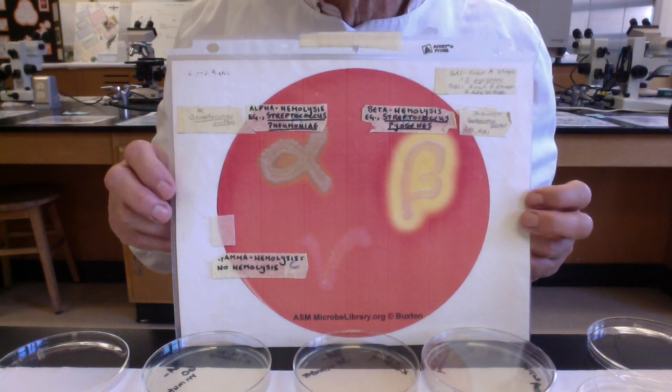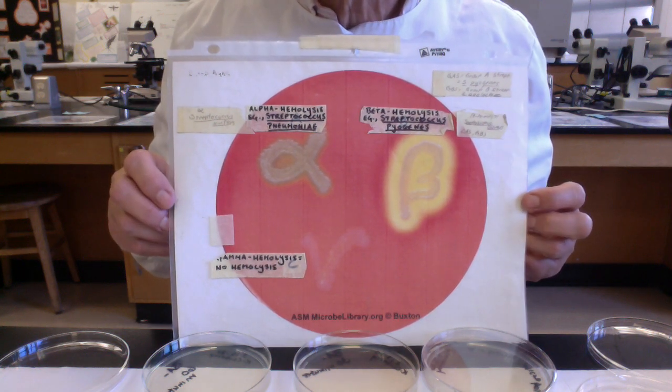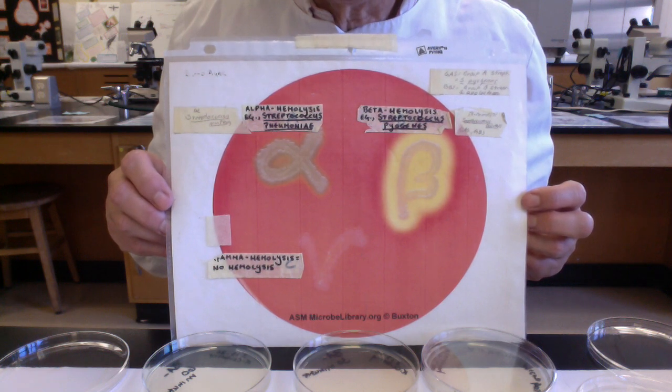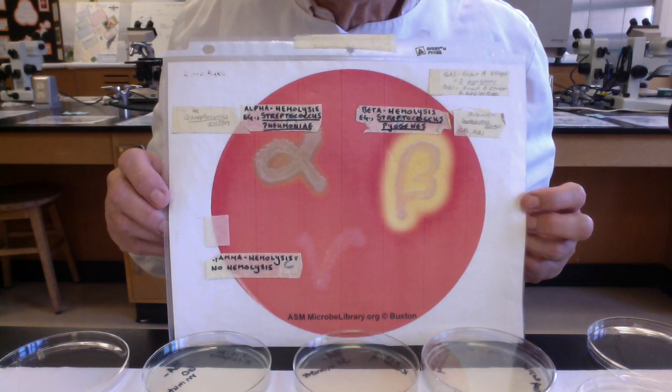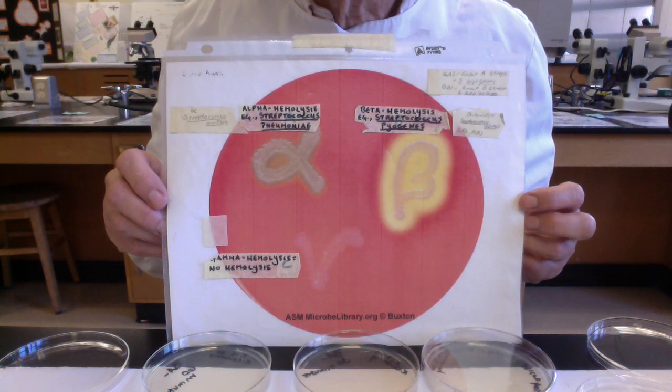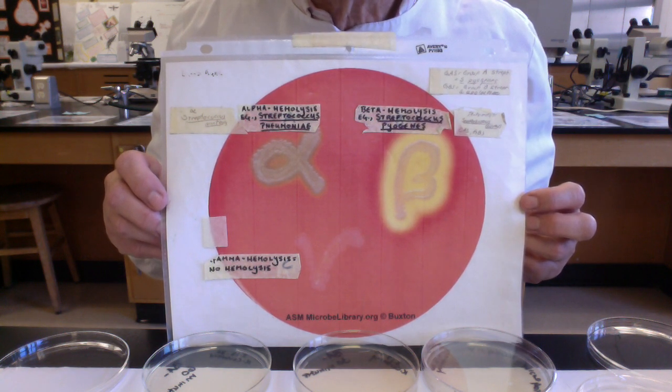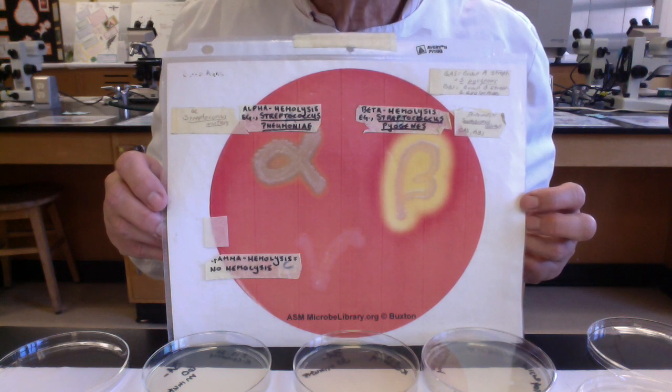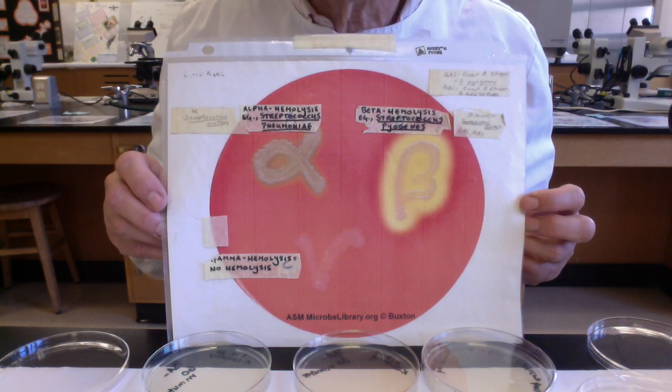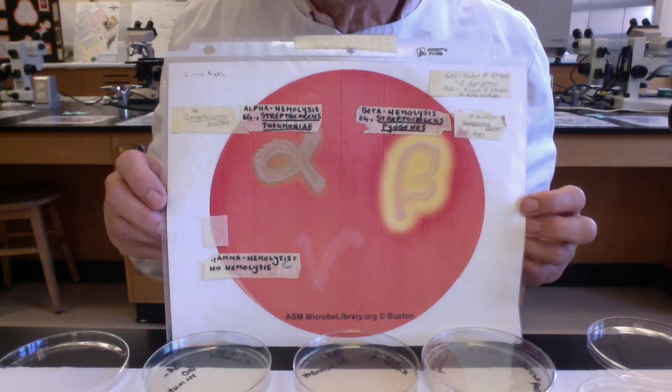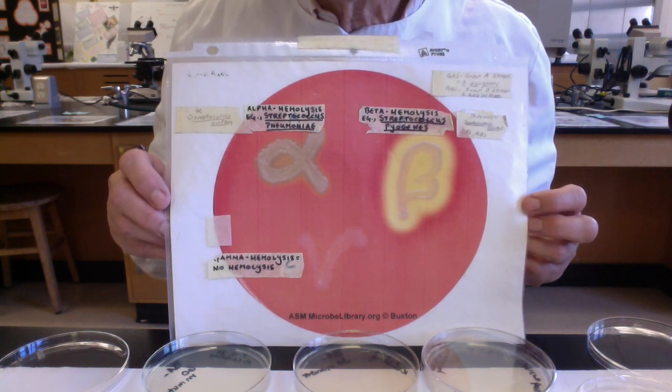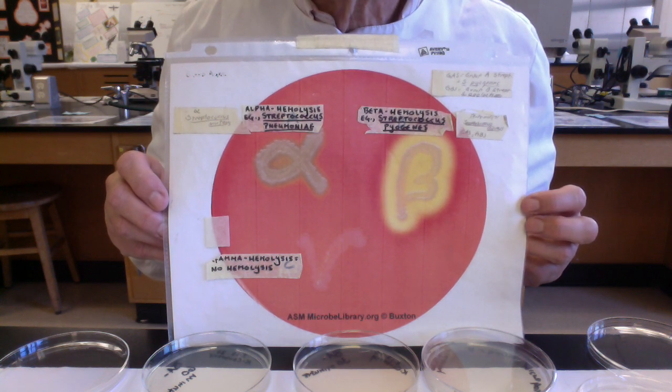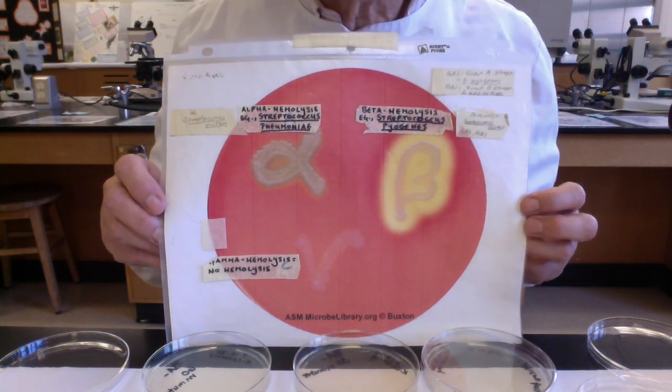If we move over to beta hemolysis, there's three gram-positive bacterial pathogens I'd like you to know that are beta hemolytic. The first one would be good little Staphylococcus aureus. So for example, if we take a nasal swab, maybe 15-20 percent of us carry Staphylococcus aureus in our nose. If on the nasal swab there's staph aureus, we're going to transfer it to blood agar, incubate it, and if staph aureus is present, we would expect to see complete total hemolysis, beta hemolysis.